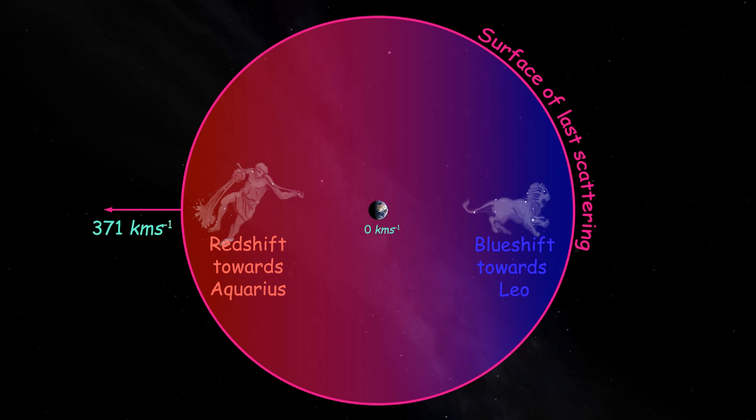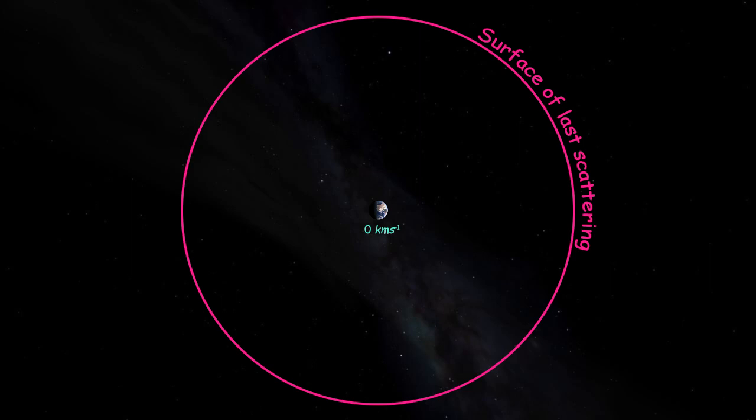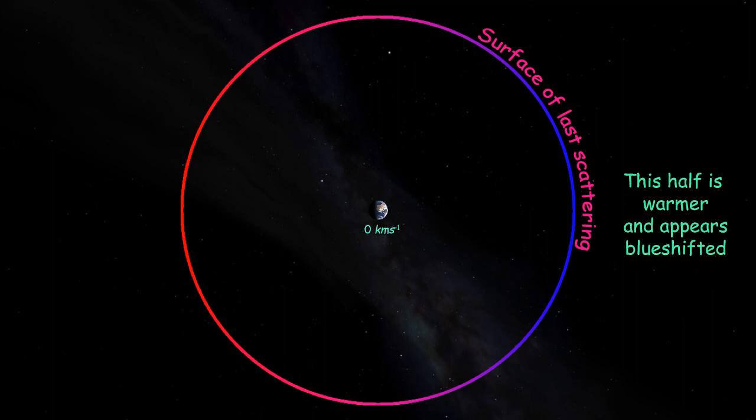The second is that for some reason at the surface of last scattering, the light emitted on one half of the universe was slightly warmer than the other, with a perfect gradation in between the two halves, that again created a dipole, entirely consistent with the observer having a velocity.